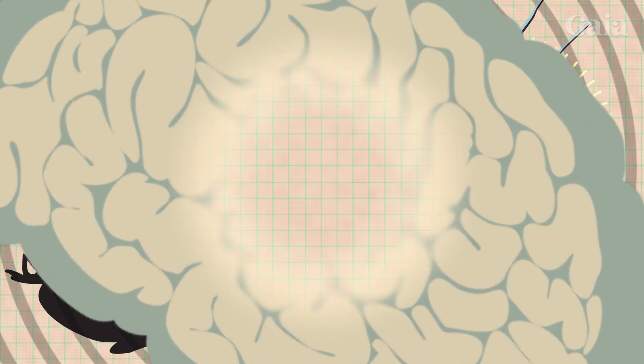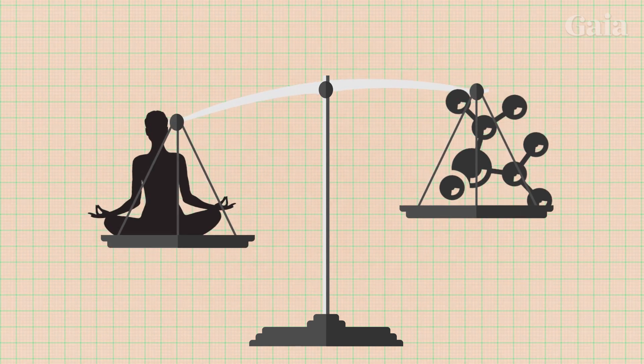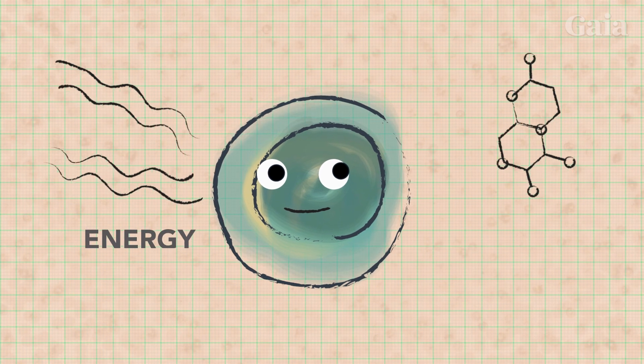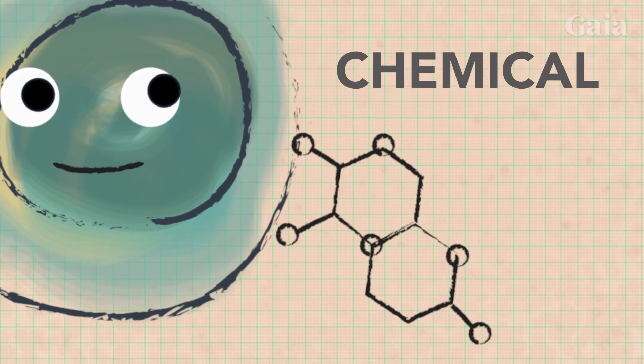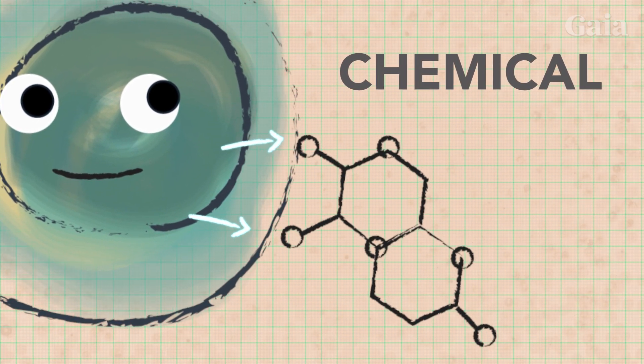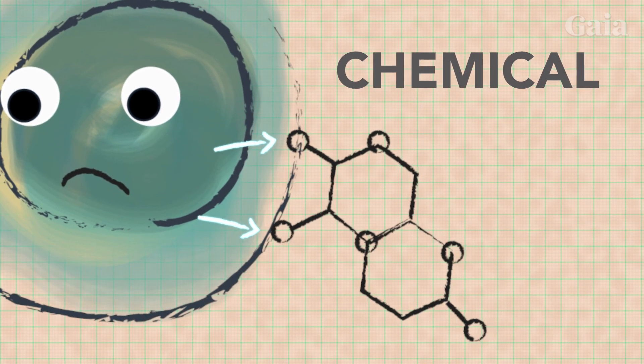But how could these woo-woo sounding modalities possibly work better than the chemicals that directly alter the functions and behaviors of particular cells? Well, it turns out that cells respond much better to energy signals than they do to chemical signals. When a chemical bond is made, most of the cell's energy is wasted through chemical coupling. So very little energy is left to take in information and respond to the signal.